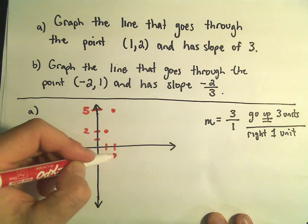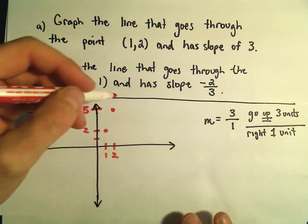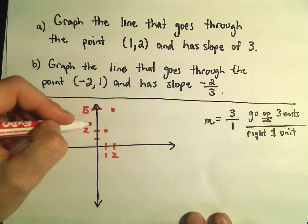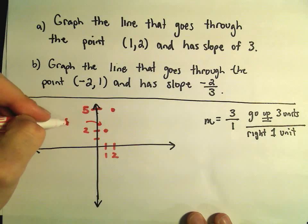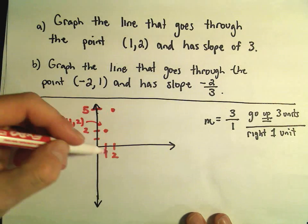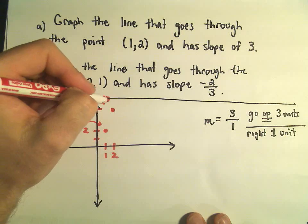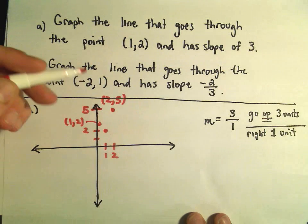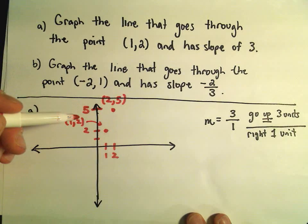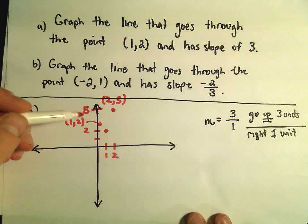Since this original point was the point 1, 2. And now we've got the coordinates of our new point. It looks like it would be 2, 5. And now we can simply just make our graph here.